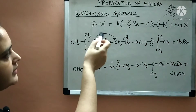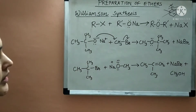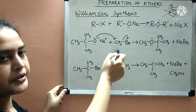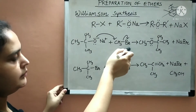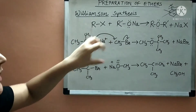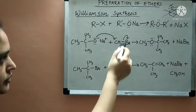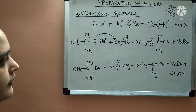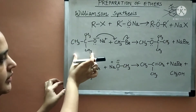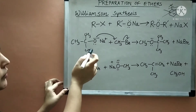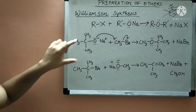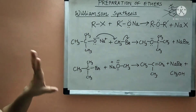Now, why should the alkyl halide be primary? Because if the alkyl halide contains a secondary or tertiary group, the attack of the nucleophile will be hindered due to steric hindrance, so it should be primary. The alkyl group attached to the sodium alkoxide, however, can be secondary, tertiary, or primary.